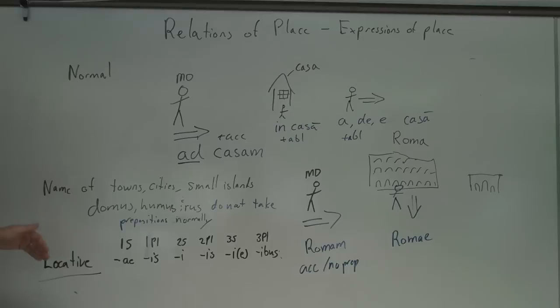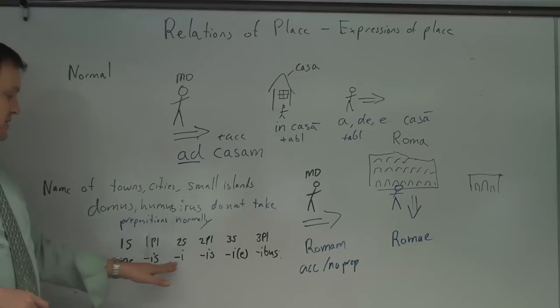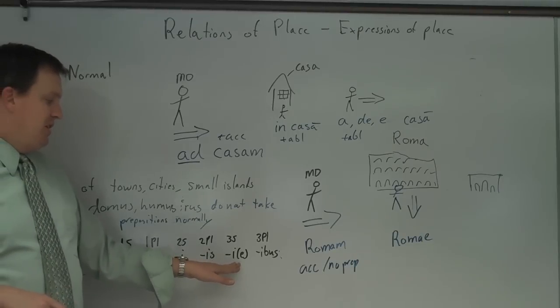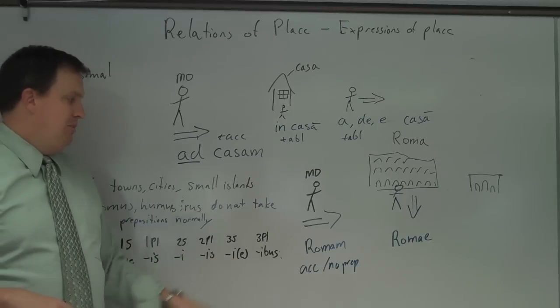So town, city, small islands, domus, which is home, humus, ground, or rus, they have a thing called locative case. And here are the locative endings. There is a fourth and fifth, but I've never seen it. So we're just going to focus on the first three. First declension is -ae, -is. Second singular would be -i, second plural would be -is. Third singular is -i, sometimes -e, and then -ibus.